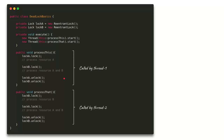In terms of code, let's say we have two methods and two locks. In the first method, 'processThis', we first acquire Lock A, do some processing for resource A, and then acquire Lock B because we need to work on both resources A and B. Once done, we unlock both locks.